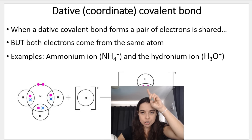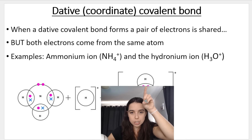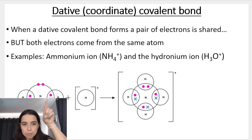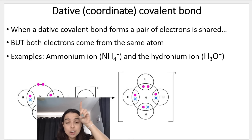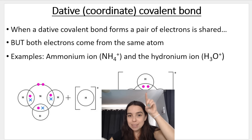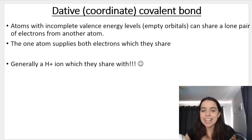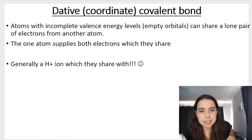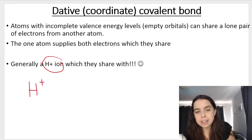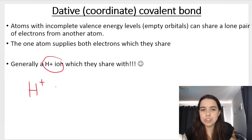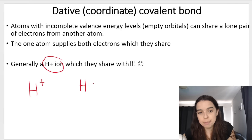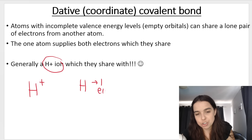Both of these electrons — there's the pair, two little purple dots — they both came from the nitrogen. The hydrogen had no electrons to share, but now there's a covalent bond that has been created. Generally it is an H+ ion that they share with, and there is a very specific reason for this. You should know that a hydrogen atom, H plus — a normal hydrogen atom — has one electron. Let's take a look at the periodic table.